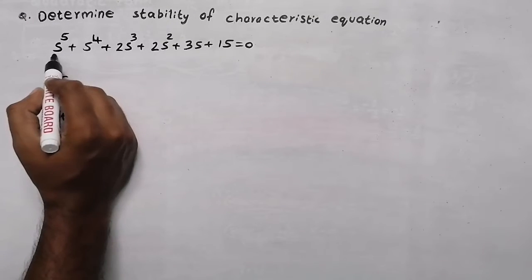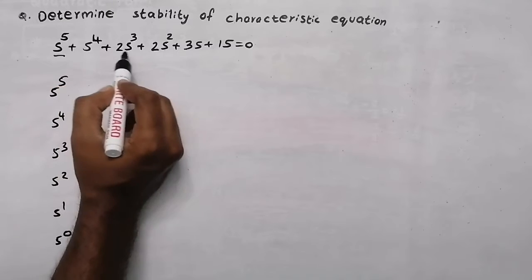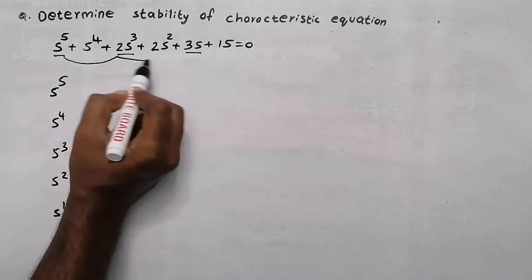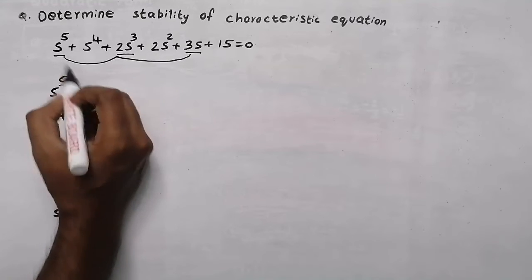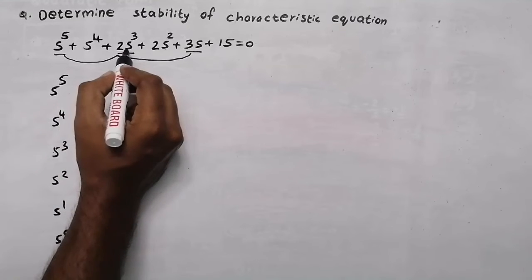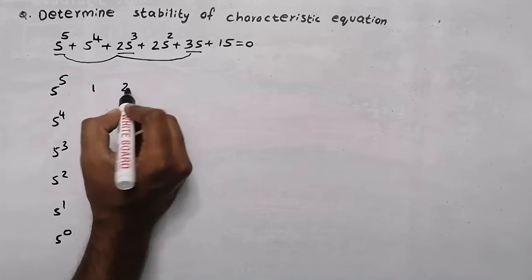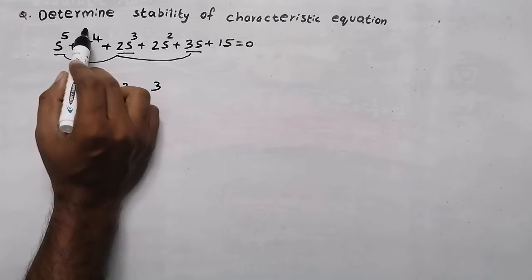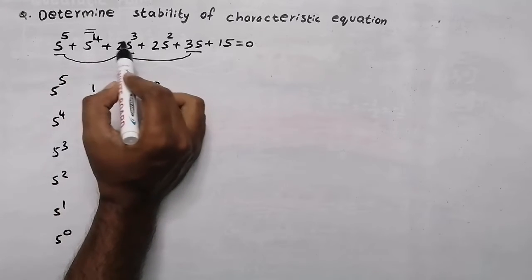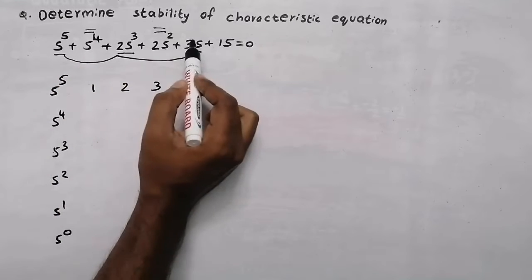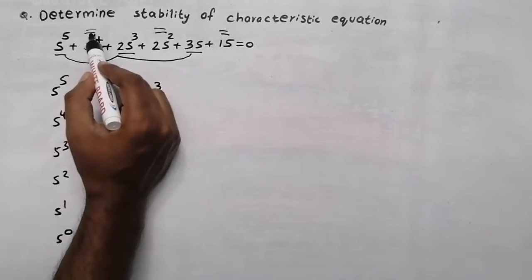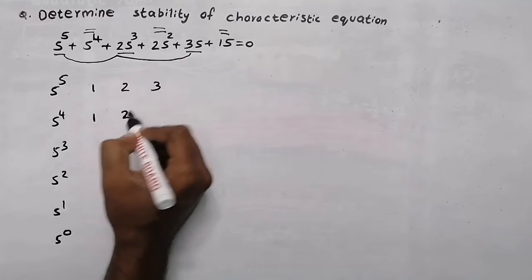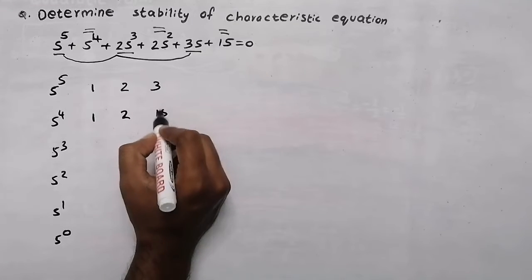Now take the first element and after a gap the next element, after a gap the next element — look at the coefficient of these elements. So s raised to 5, the coefficient is 1. S cubed, the coefficient is 2. S the coefficient is 3. Now take the 2nd element and after a gap the next element: the coefficient of s raised to 4 is 1, the coefficient of s squared is 2, and here the value is 50.